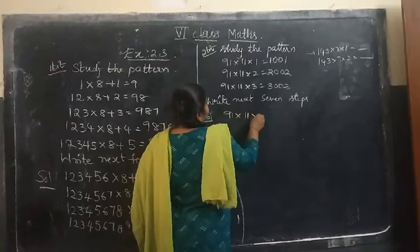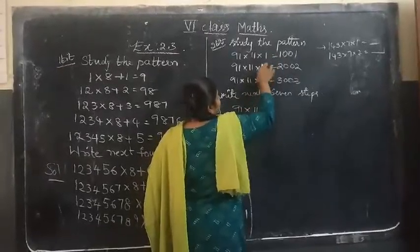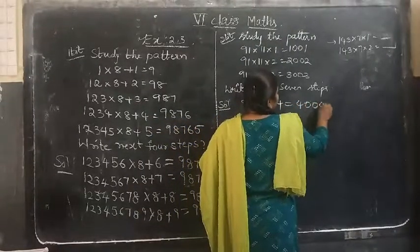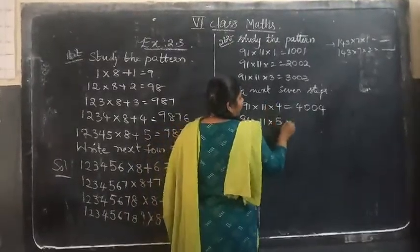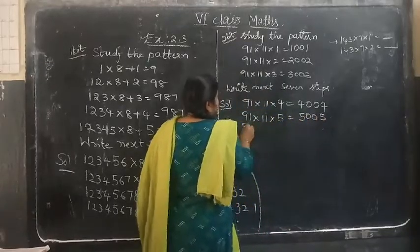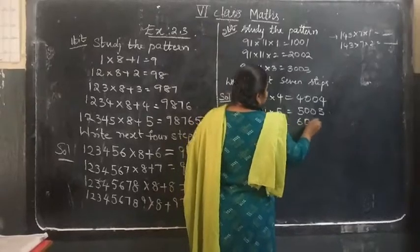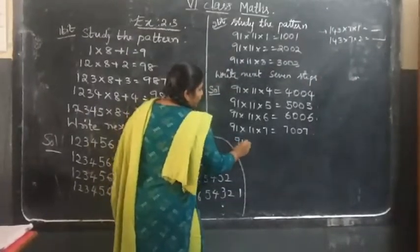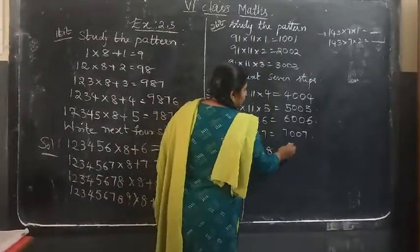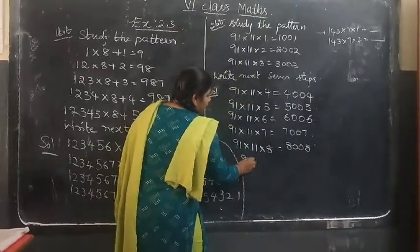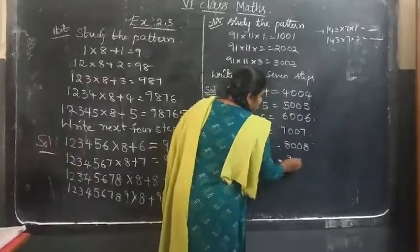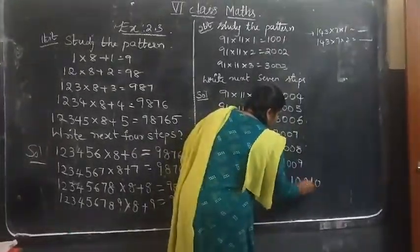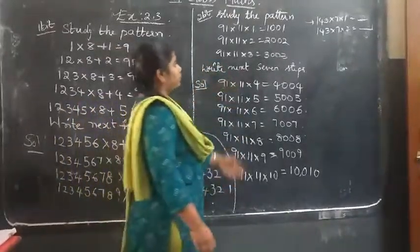In 91 × 11 × n, only these two variables are the same in all steps — only the multiplying number is changing: 1, 2, 3. After that we get 4. So 91 × 11 × 4 = 4004; 91 × 11 × 5 = 5005; 91 × 11 × 6 = 6006; 91 × 11 × 7 = 7007; 91 × 11 × 8 = 8008; 91 × 11 × 9 = 9009; and the last 7th step: 91 × 11 × 10 = 10010. So these are the next seven steps for this pattern.